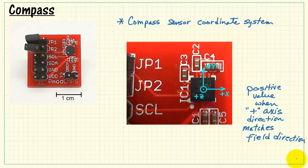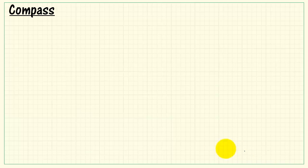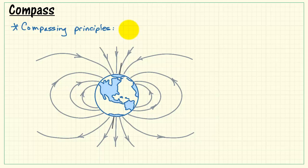You get a positive value when the plus axis direction matches the magnetic field direction. Let's review some basic compassing principles. Here's the Earth's magnetic field. We have the north and the south pole. The magnetic fields are associated with the Earth's core. They emanate from the south pole and terminate back at the north pole.